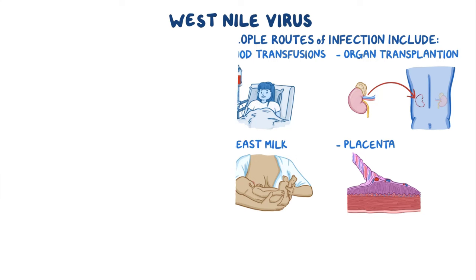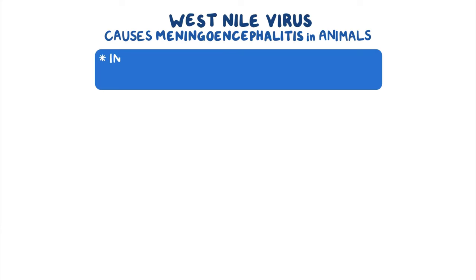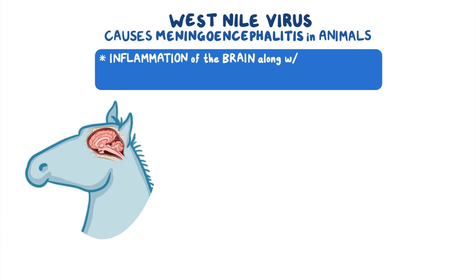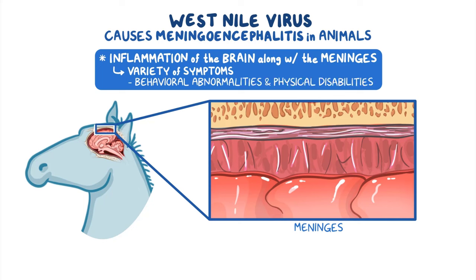The virus usually causes meningoencephalitis in animals, which is inflammation of the brain along with its protective membranes, the meninges. This results in a variety of symptoms, including behavioral abnormalities and physical disabilities.